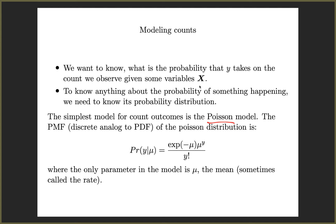The Poisson probability mass function — remember, probability density functions are for continuous variables and probability mass functions are for discrete variables — has really only one parameter, which is mu, the mean of the distribution, sometimes also called the rate. It shows up twice in the formula. Everything else is observed: Y, Y factorial, and the exponentiation operator.